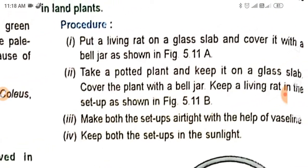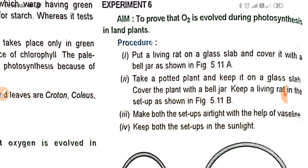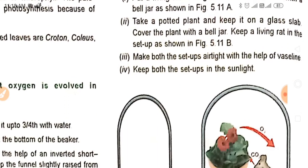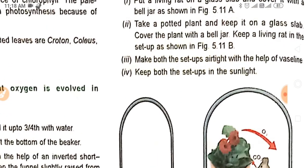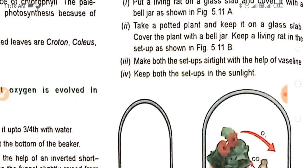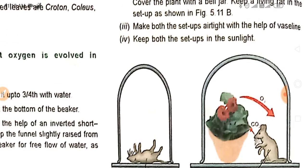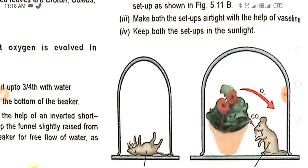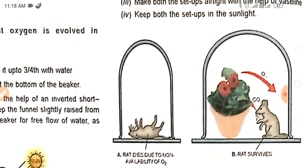Put a living rat on a glass slab and cover it with a bell jar, as shown in Figure 5.11a. Take a potted plant and keep it on a glass slab. Cover the plant with a bell jar, keeping a living rat in the setup, as shown in the figure. Make both the setups airtight with the help of vaseline. Keep both the setups in the sunlight.